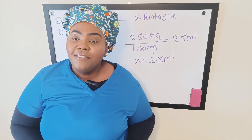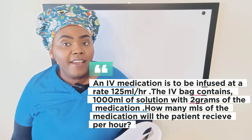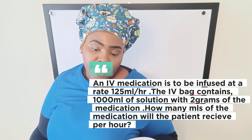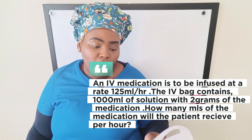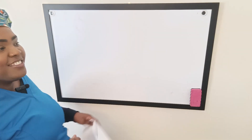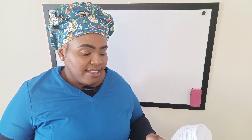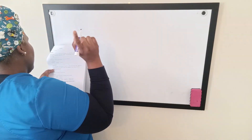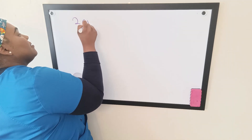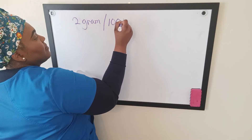Our fifth and final IV drug dosage example: an IV medication is to be infused at a rate of 125 mils per hour. The IV bag contains 1,000 mils of solution with 2 grams of the medication. How many milligrams of that medication will the patient receive every hour? We need to determine the concentration to figure out how much medication is in each mil.